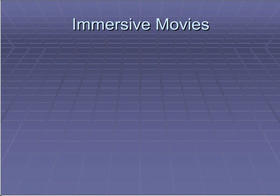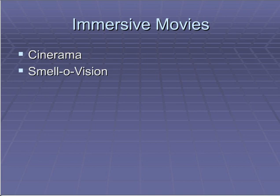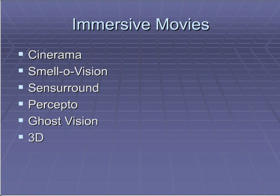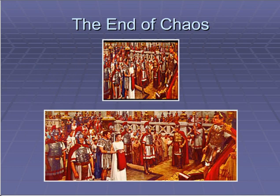In the 1950s, we saw everything kind of come together — every type of gimmick known to man. Cinerama had three cameras and three projectors to get a full visual surround. We had Smell-O-Vision. We had Sensurround, which was the vibrating seats. We had Percepto with the shocking seats. We had Ghost Vision. We had my favorite: 3D. But then it all died. You know why it died? All hail Cinemascope and the end of chaos.